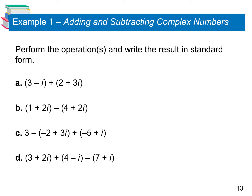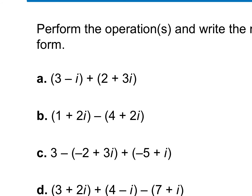Now let's look at some examples. When adding, we just add the real numbers together and add the imaginary numbers together, then write it in standard form. Since we're just adding, we can ignore the parentheses: 3 minus i plus 2 plus 3i. Real parts: 3 plus 2 is 5. Imaginary parts: negative i plus 3i is 2i. Answer is 5 plus 2i. You treat i as if it were a variable like x and just add the coefficients.